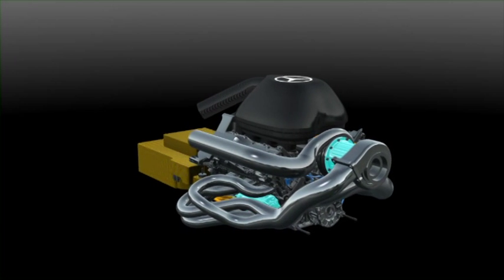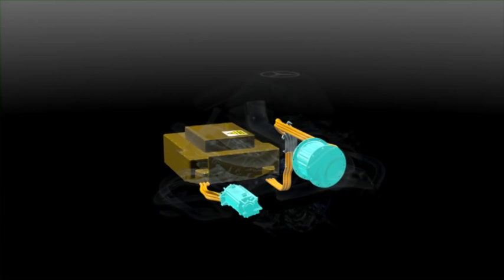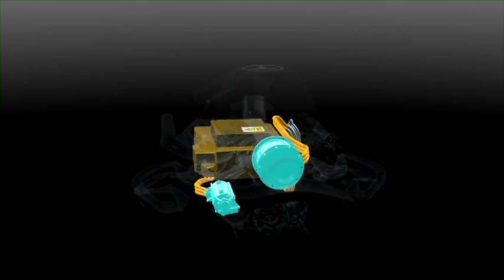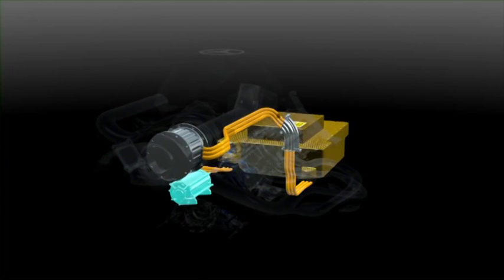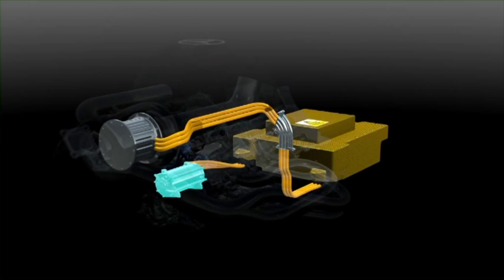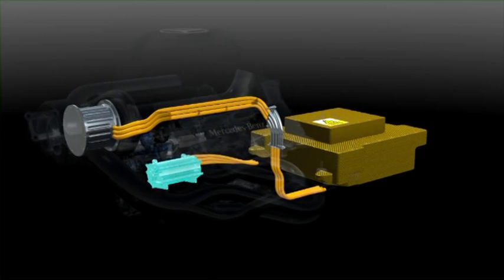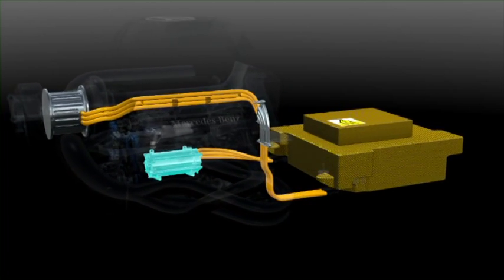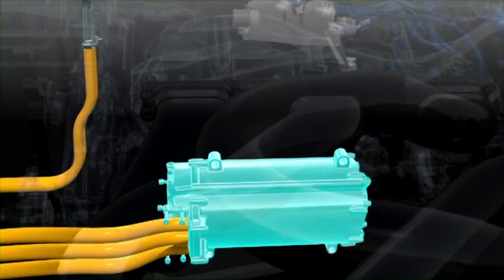The engine is boosted by a hybrid system made up of two electrical motor generators to recycle energy that would otherwise be lost. The MGU-K delivers up to 160 horsepower for 33 seconds per lap, equivalent to a Mercedes C220 CDI.